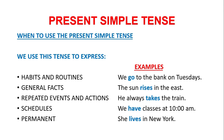We use this tense to express habits and routines. For example, we go to the bank on Tuesdays. General facts — for example, the sun rises in the east. Repeated events and actions — for example, he always takes a train.